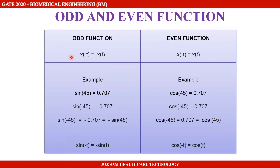Sin is an example of an odd function, and cos is an example of an even function. For instance, sin 45° is equal to 0.707, and sin(−45°) is equal to −0.707. So sin(−45°) = −0.707, which equals minus of sin(45°), confirming sin is an odd function.